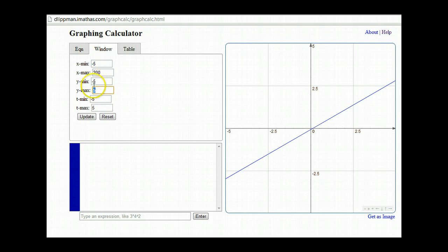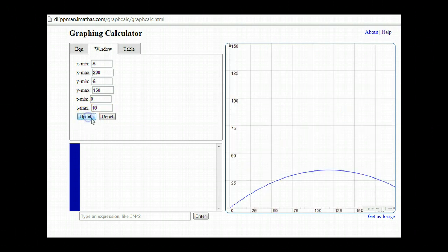For my y my minimum's at negative 5, I'm going to set my maximum at say 150 and I'll adjust if I need to based on what comes out. For my t, time is going to start at 0 and I'll say I'll go to 10 seconds just in case. Okay and then I update.